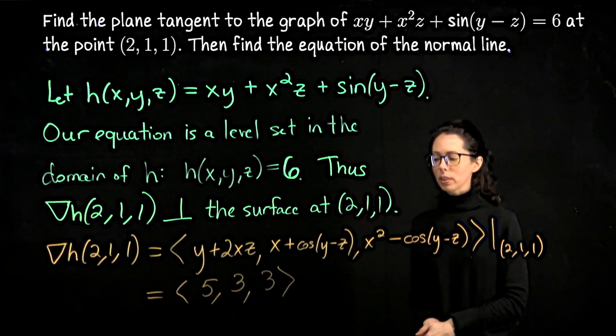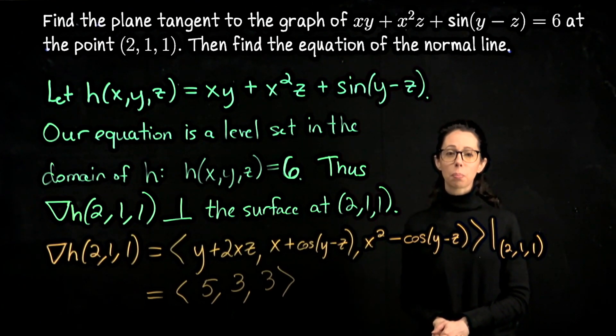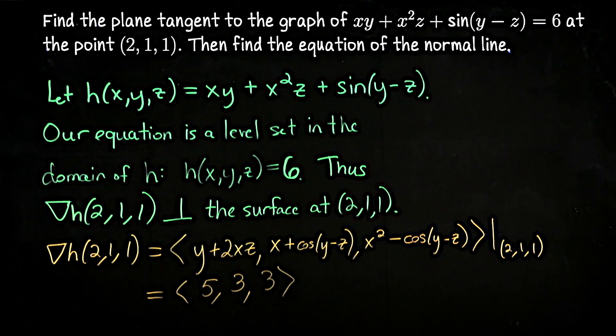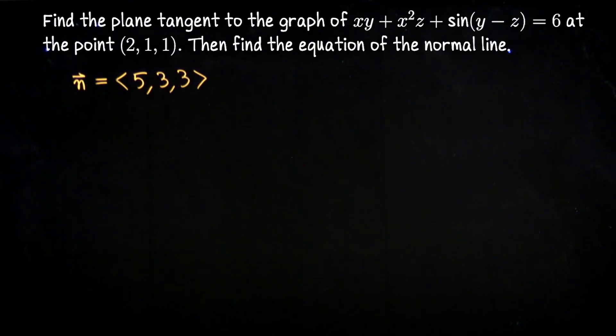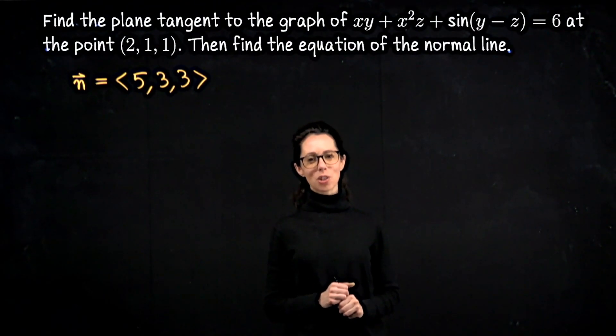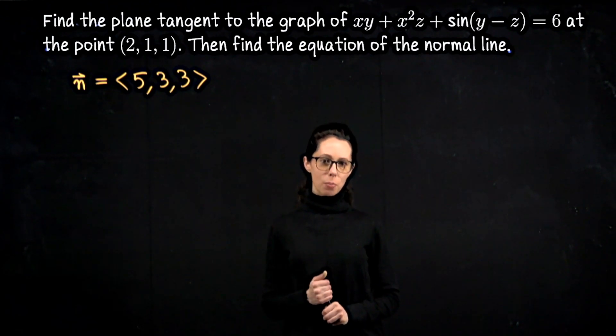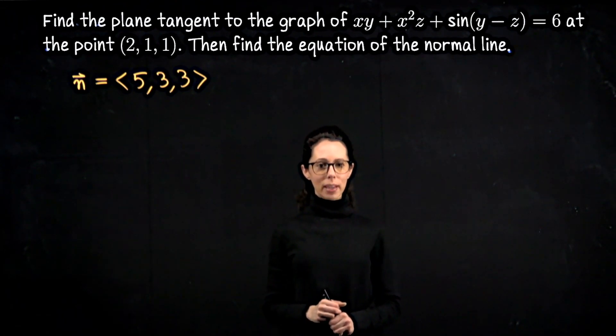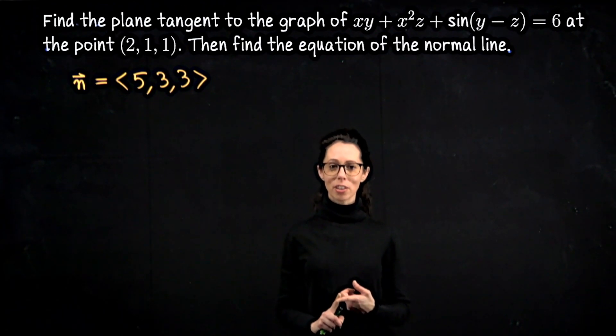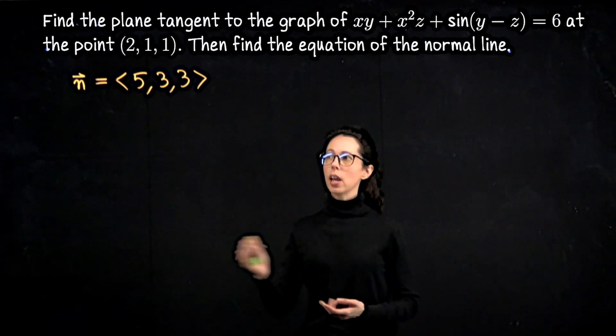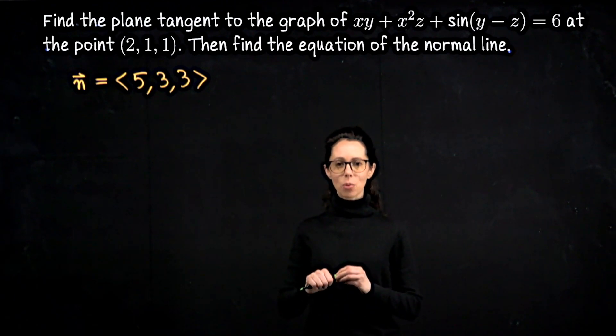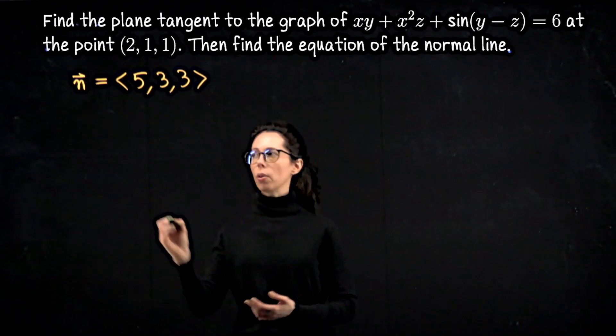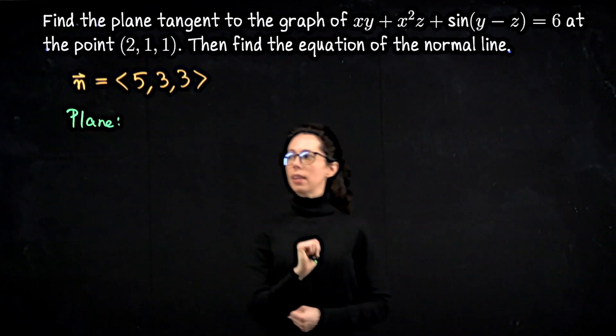We are now ready to write down the equation of our plane. We don't need to talk about h anymore. What we wanted to get from that function h is this vector, which is orthogonal to our plane. In order to write down a plane, all you need is a point on the plane, which we were given at the start, the point (2,1,1), and the orthogonal sense of direction, which we can now characterize as <5, 3, 3>. With that information, we can use this vector dot product formulation to say what all points (x, y, z) on the plane have to satisfy. Then we will expand that to write it in general form. Let me just revisit that vector dot product formulation.